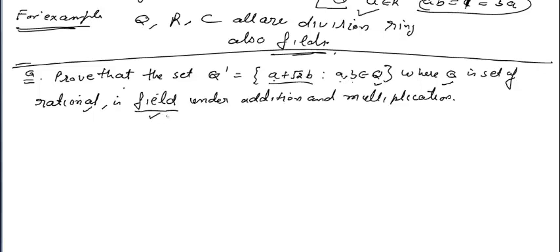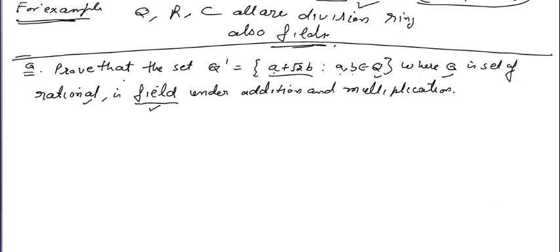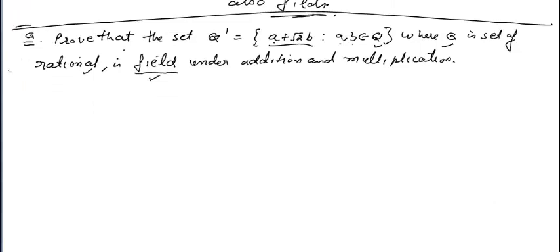Before starting this question, I want to clarify that we have a total of 11 properties that we have to check to determine whether the given set is a field or not. I will go through them one by one, starting with the first property.